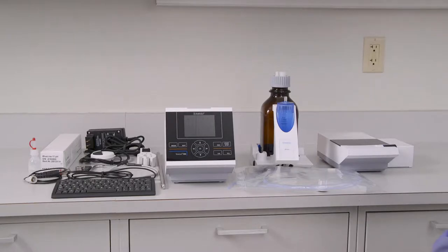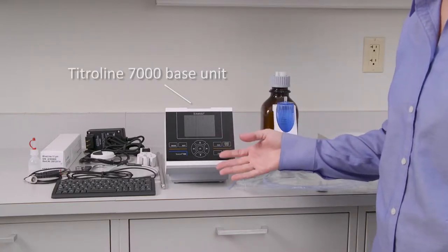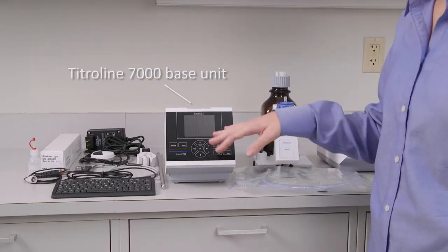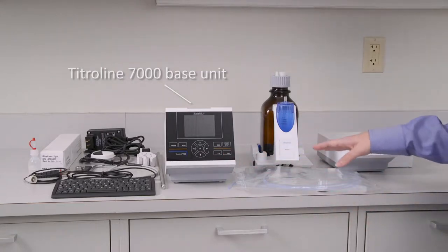We've got three main components of the system. The first one being the Titroline 7000 base unit. This is essentially the brain of the system, and all of the accessories that you see here will come along with that. The next part is the exchangeable burette.